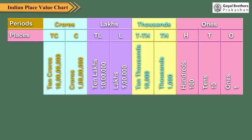While reading a number, all the digits in the same period are read together, and the name of the period — except the Ones — is read along with them.